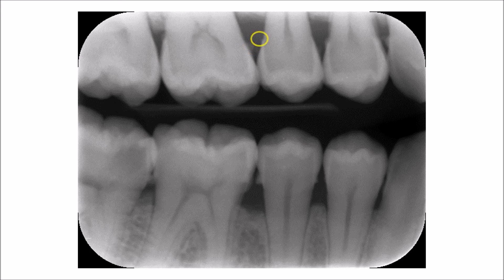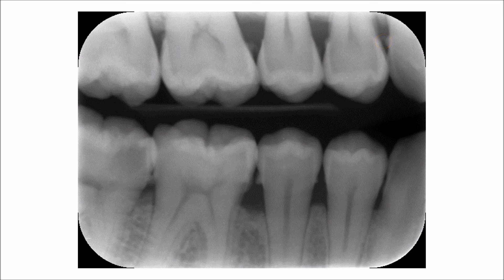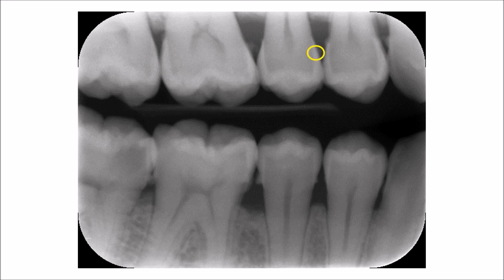Calculus can also be found on the distal surface of the first premolar and the distal surface of the canine. The calculus on the lower teeth has not been marked — please look and try to detect the presence of calculus on the different surfaces of the lower teeth. Also notice that whenever calculus is present, there is concurrent bone loss, along with the other factors that initiate and promote the periodontal disease process.